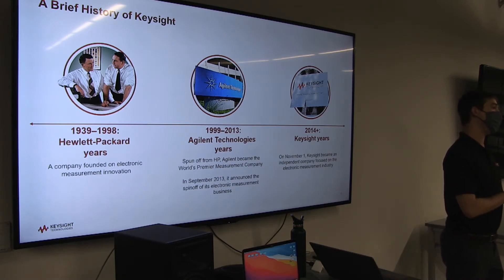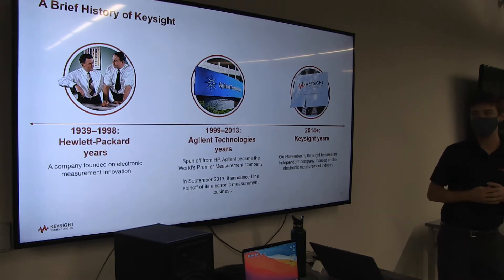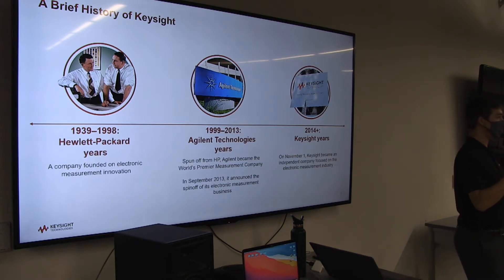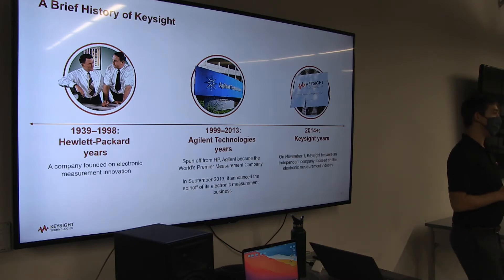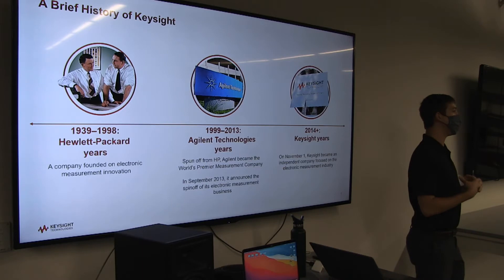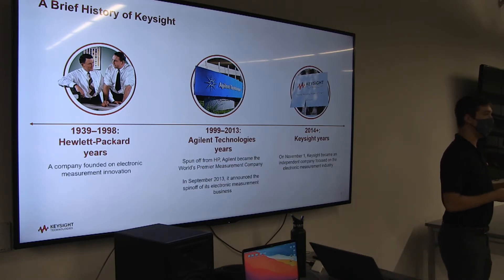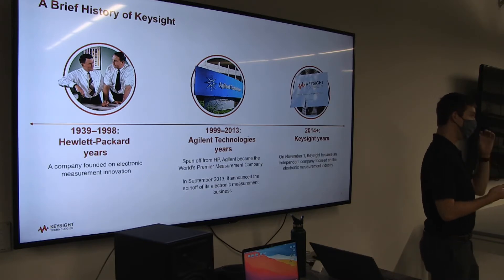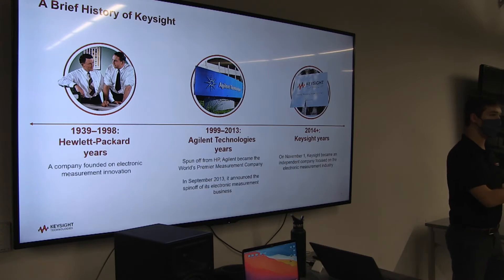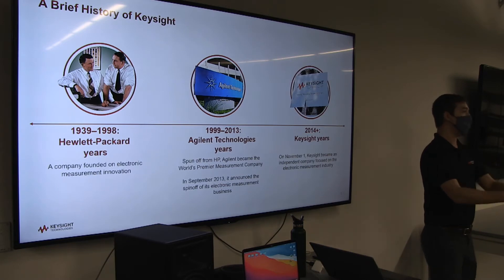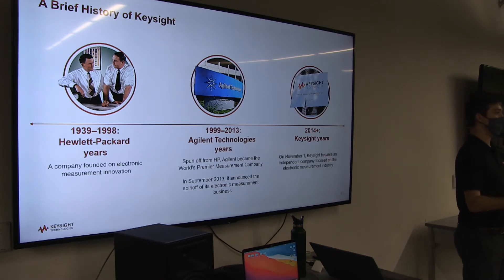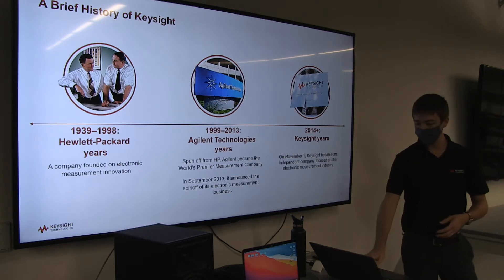Over the years, HP became big into computers, printers, and consumer electronics, and the electronics test and measurement part of the business took a back seat. So we spun off the electronics division to become Agilent Technologies, and then through another name change, we became Keysight about seven years ago. We don't make consumer electronics — you're never going to go to Best Buy and buy a Keysight phone. But if you think of your iPhone or Samsung phone, we make devices that test every single component in that device, from the silicon chips all the way to how data flows, power transfer, and the wireless side.